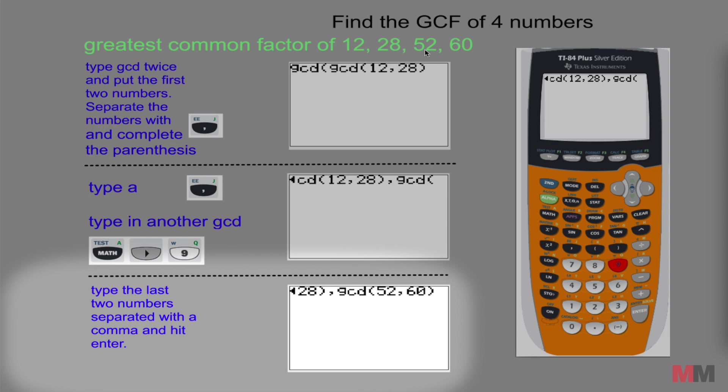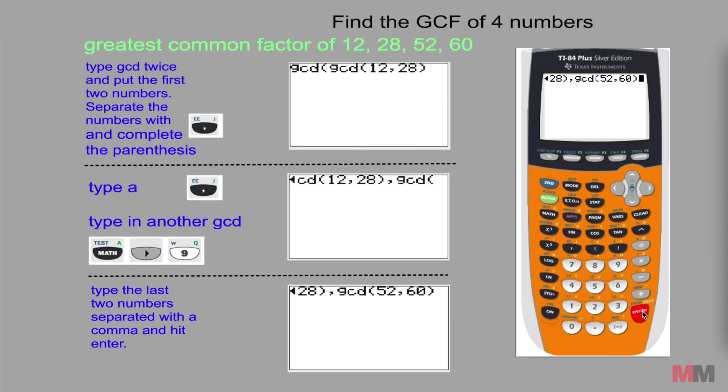Final step: type in the last two numbers which is 52 separated with a comma, and 60. Complete that parentheses and if you press enter, you've got your answer, 4. 4 is the largest number that divides into 12, 28, 52 and 60.